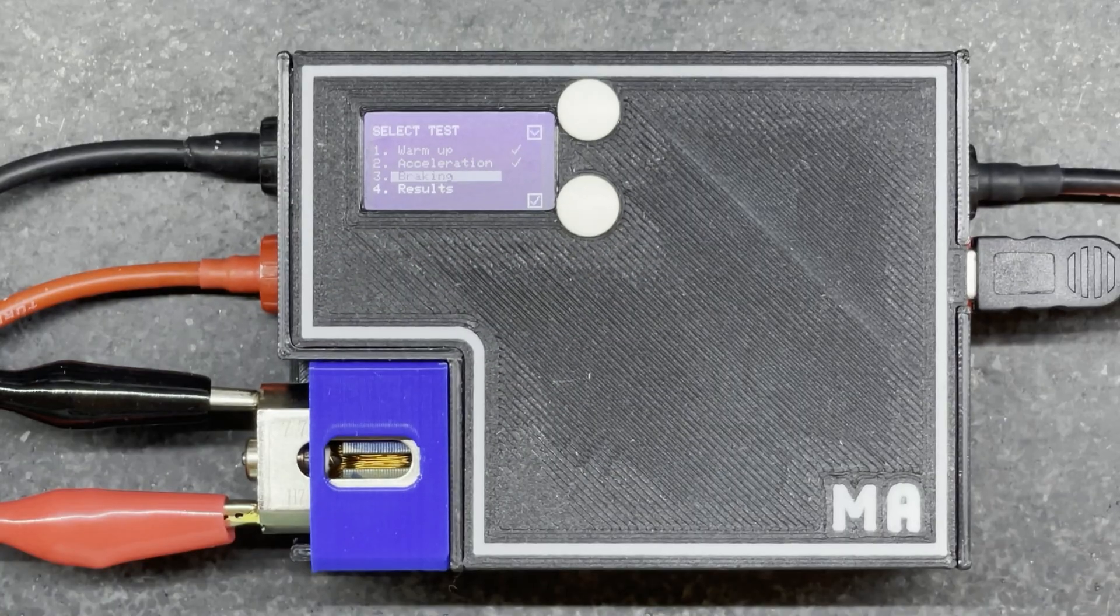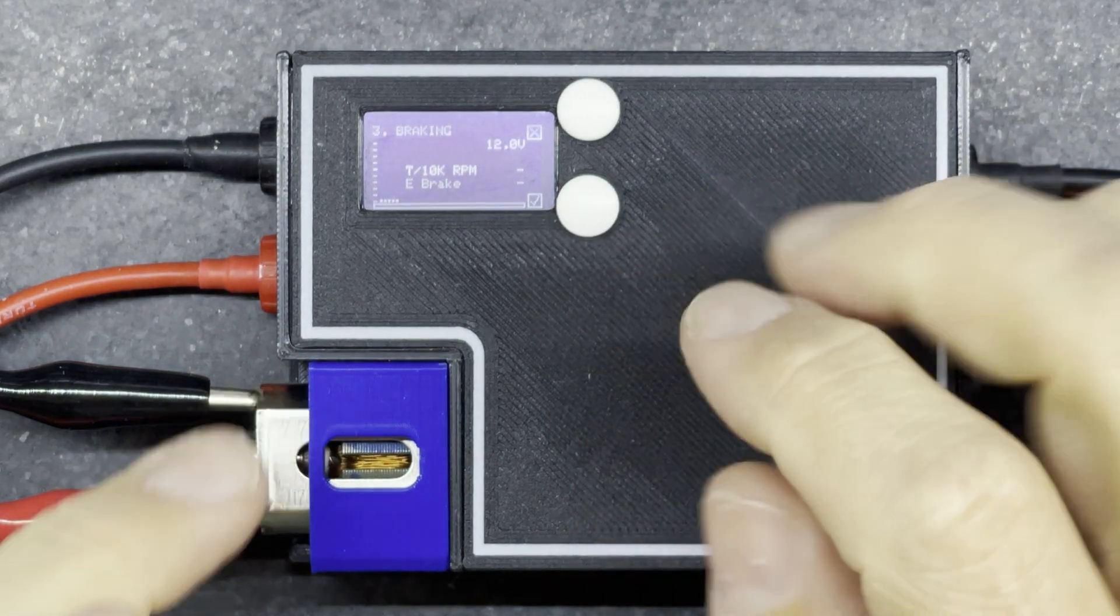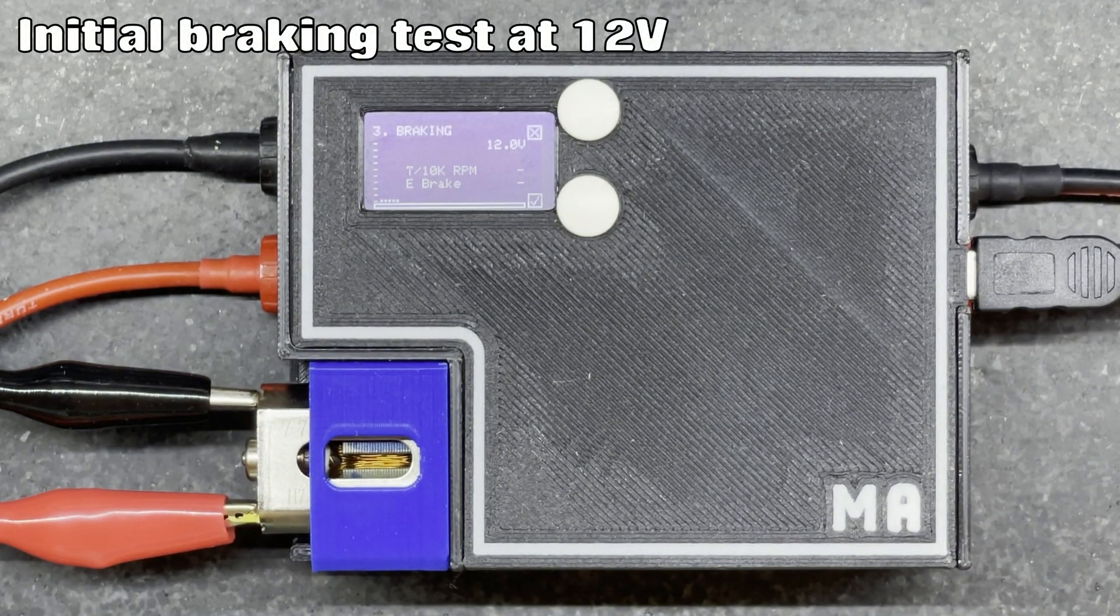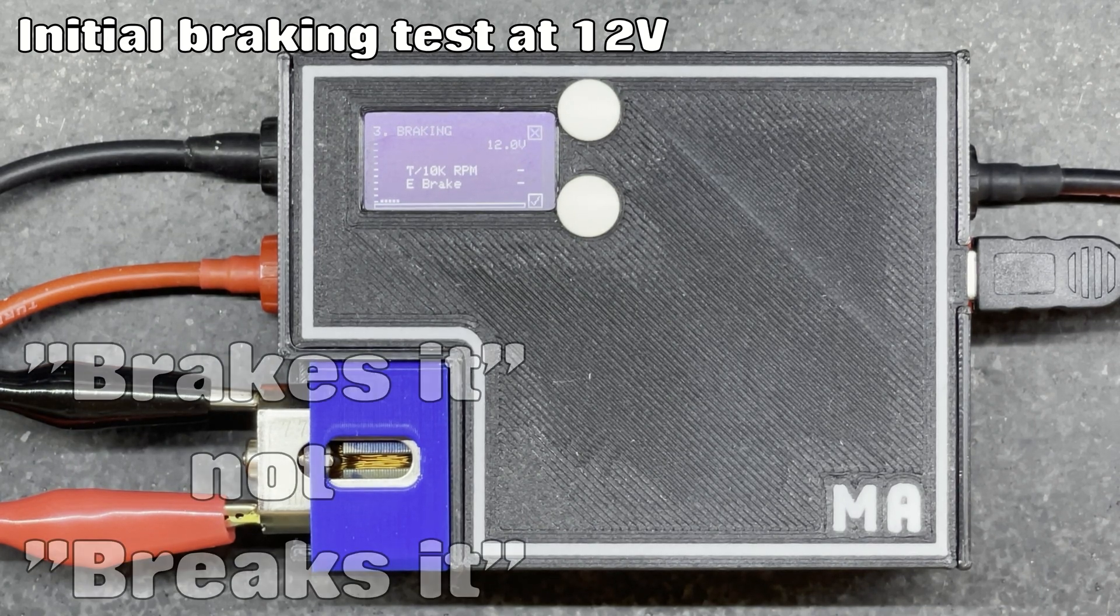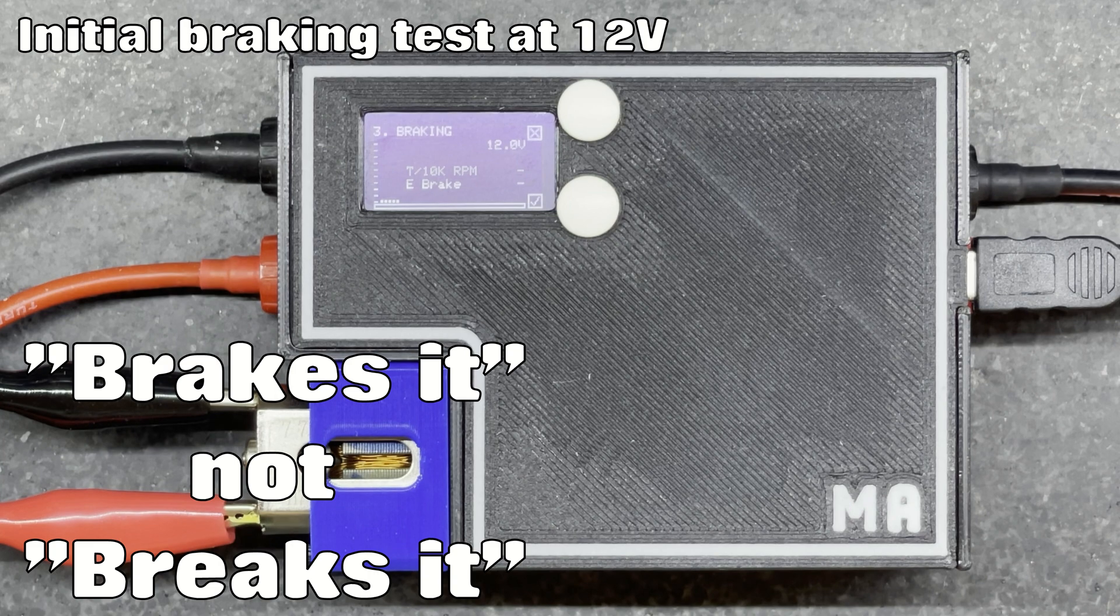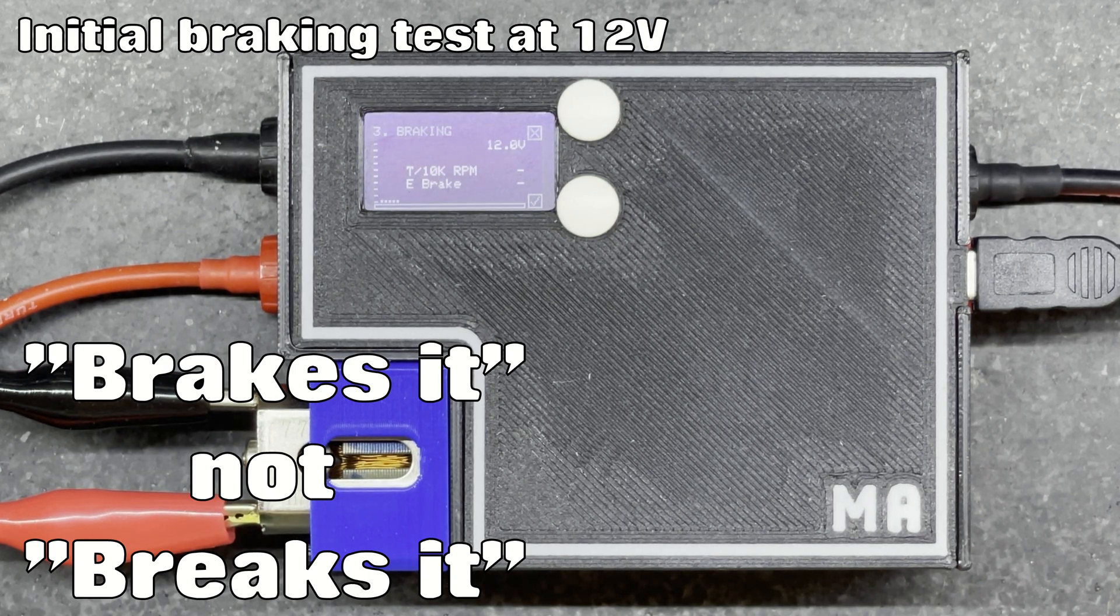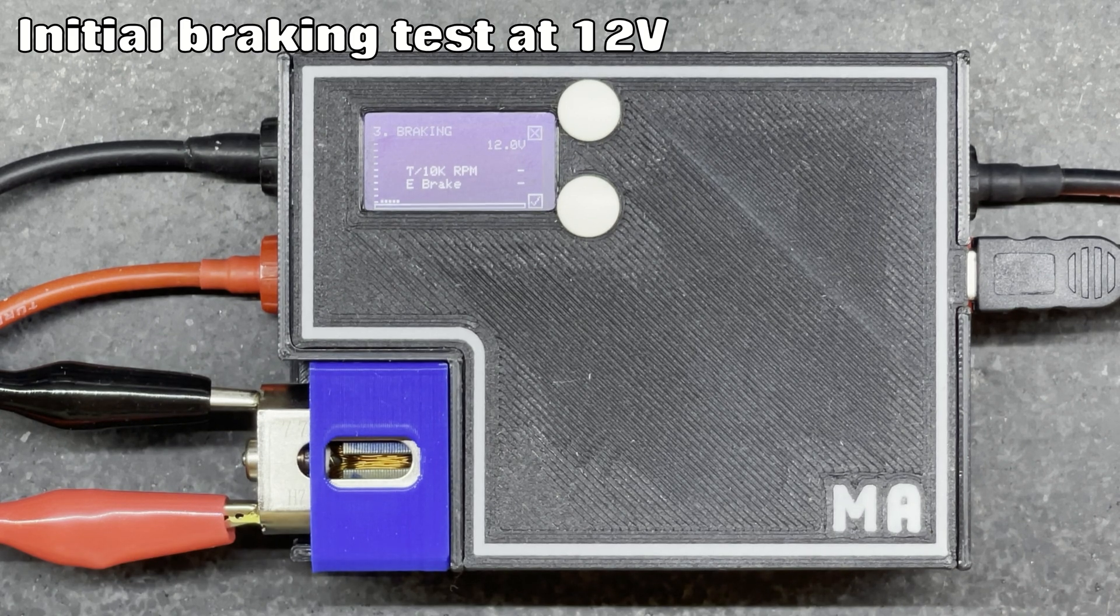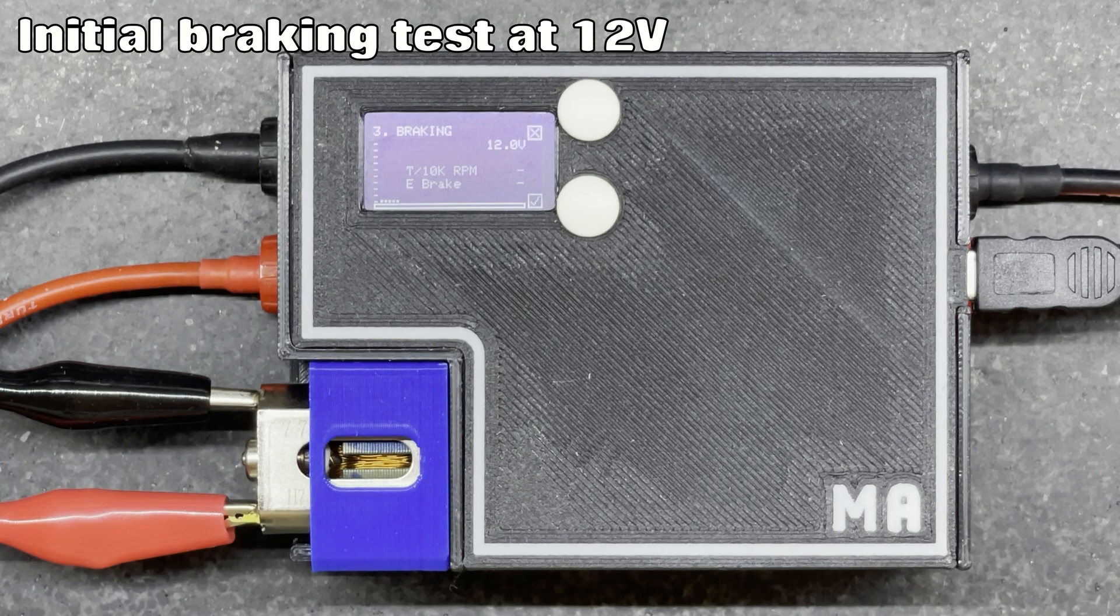And then we'll run it through the braking test. The braking test I'm going to run at 12 volts to match the track. This accelerates the motor then brakes it and measures the time taken to brake per 10,000 RPM. It also gives you a brake power figure which is your e-brake. The higher the number, the more brake the motor has.